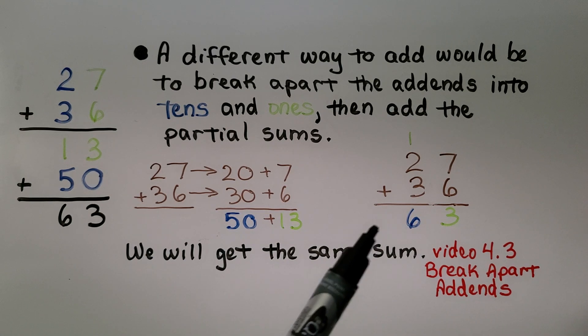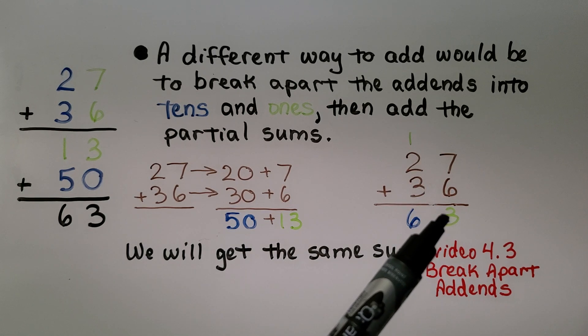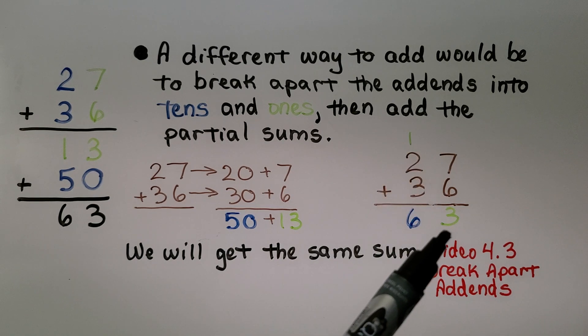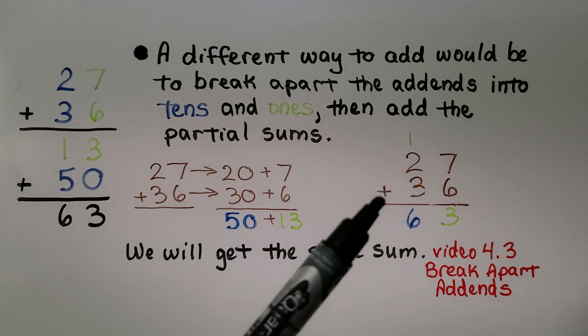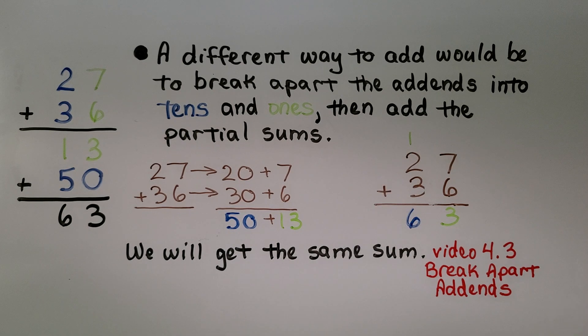We can do it the way we've been doing in this video. We can add 7 plus 6, which is 13. That's 1 10 3 1. So we regroup the 1 10 to the tens column and write the 3 in the ones column. Then we just add the tens. 3, 4, 5, 6. We have 63. Either way, we'll get the same sum.